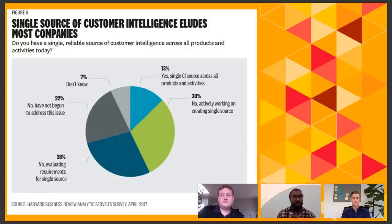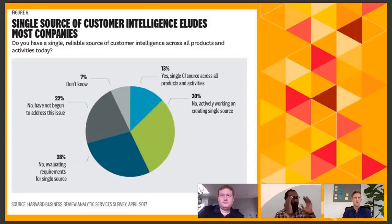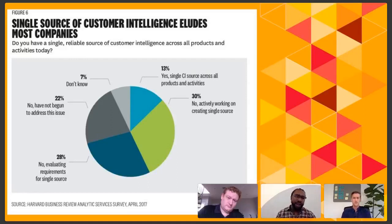Sales enablement becomes more difficult, conversion becomes more difficult, and you're going to probably be spending more money to acquire customers. Delivering personalized experiences is going to be really tough if you do not have what's known as a single source of truth — getting all that data from your point of sale, from your website, from your applications, and putting them all into one platform where you can access it.